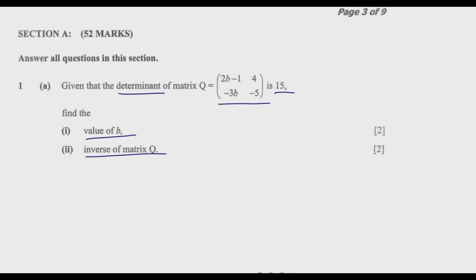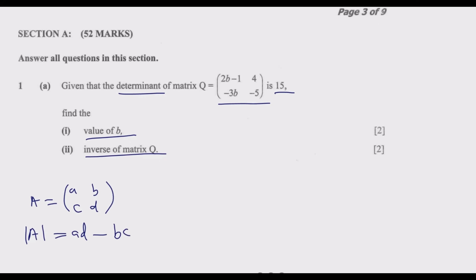Since we know the determinant is 15, we can find the value of B. For a standard 2×2 matrix with entries A, B, C, D, the determinant is A times D minus B times C. You multiply the main diagonal and subtract the product of the off-diagonal. Based on that principle, we find B by computing the determinant of this matrix and equating it to 15.